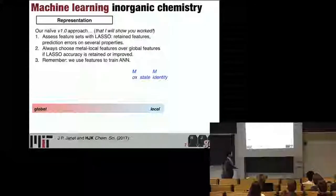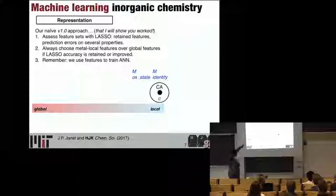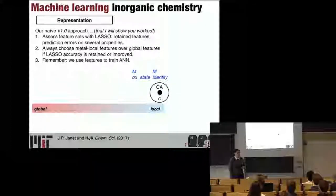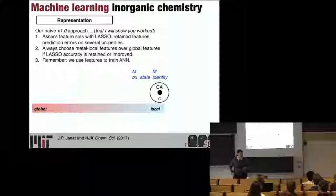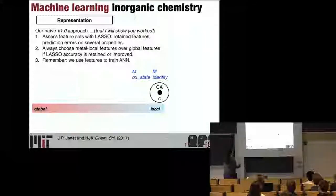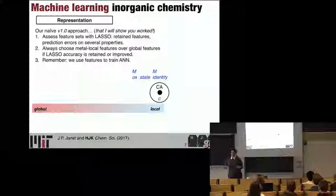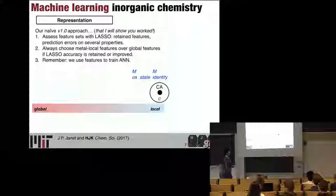For inorganic chemistry, the way this worked was we came up with various possible feature sets. We assessed them with LASSO, then used them to train more sophisticated models. If they didn't improve LASSO errors, we didn't keep those — it was a very crude feature selection technique. Those features largely came from me as a person who had been studying inorganic chemistry for years — things I knew had to matter. I would tell my student 'this has to matter,' and he would disagree with me and say, 'no, it doesn't actually matter.'